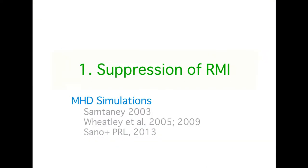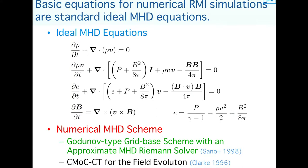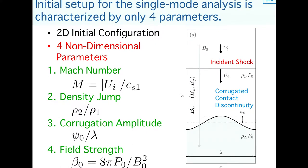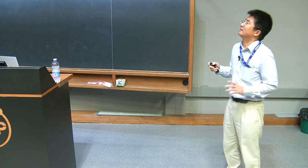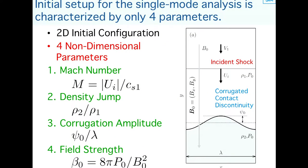The first effect is the suppression of Richtmyer-Meshkov instability. This has been studied by many authors, and I studied it by MHD simulations. The basic equations are the standard ideal MHD equations. For the MHD scheme, I use a Godunov-type grid-based scheme with an approximate MHD Riemann solver to capture the strong shock. The initial setup for RMI is characterized by four non-dimensional parameters: Mach number of the incident shock, density jump, corrugation amplitude at the interface, and the magnetic field strength given by plasma beta.